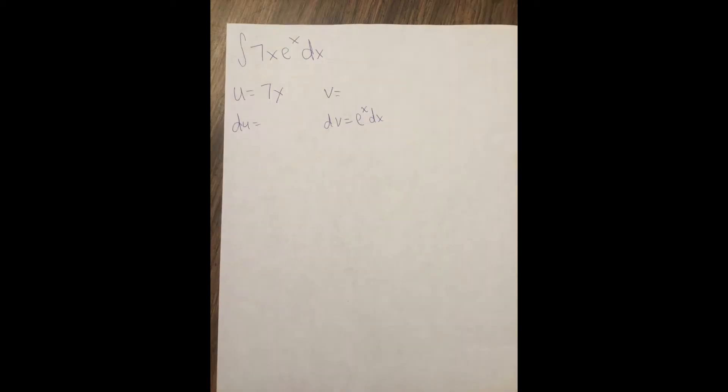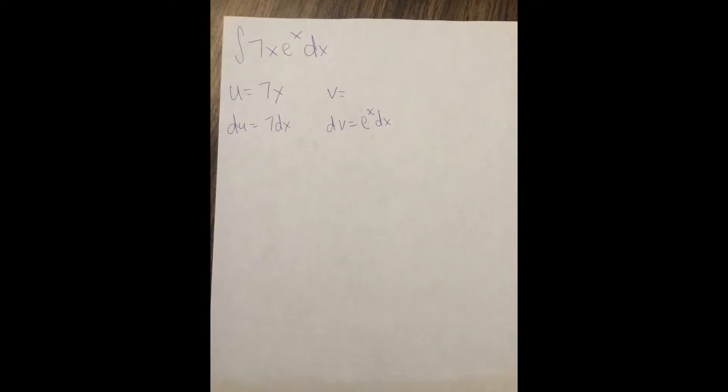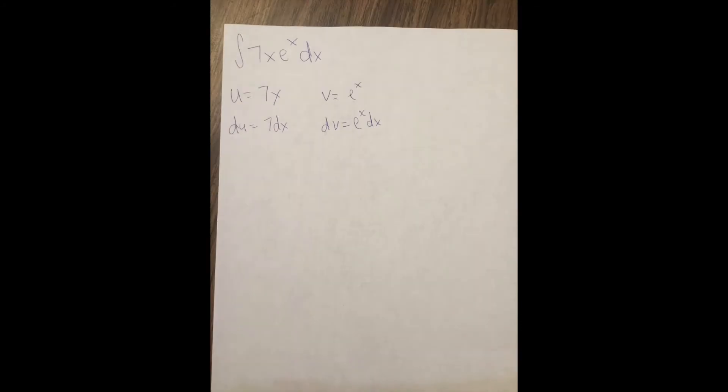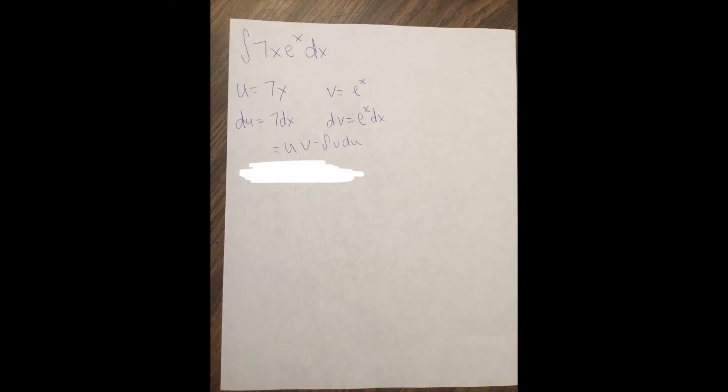And neither one of them is a derivative of the other. So we set up the u, v, du, and dv box again, and the original problem is u and dv. Now, this will come up again later, but whatever dv is,